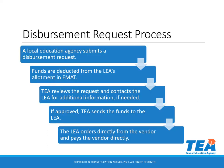The allotment disbursement request process. A local education agency submits a disbursement request. Funds are deducted from the LEA's allotment in EMAT. TEA reviews the request and contacts the LEA for additional information if needed. If approved, TEA sends the funds electronically to the LEA within 7 to 10 business days.